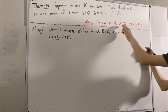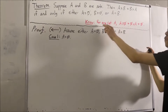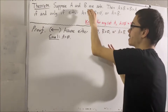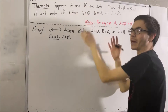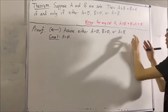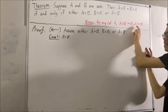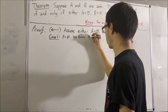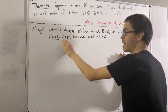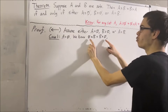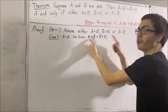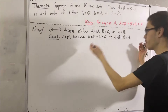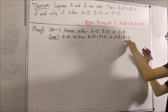Now, remember, because the useful fact holds for any set, it's true for the set B we're working with in our proof. So, we know that the empty set times B is equal to B times the empty set. And since A is equal to the empty set, we can replace the empty set with A. And so, in this case, we have proven that A times B is equal to B times A.